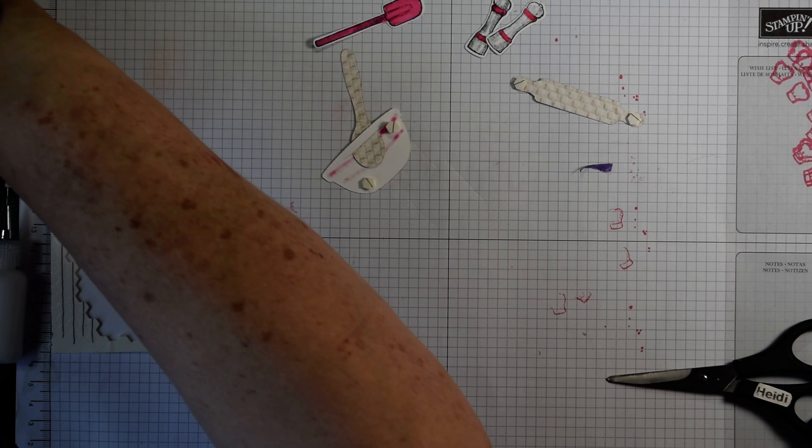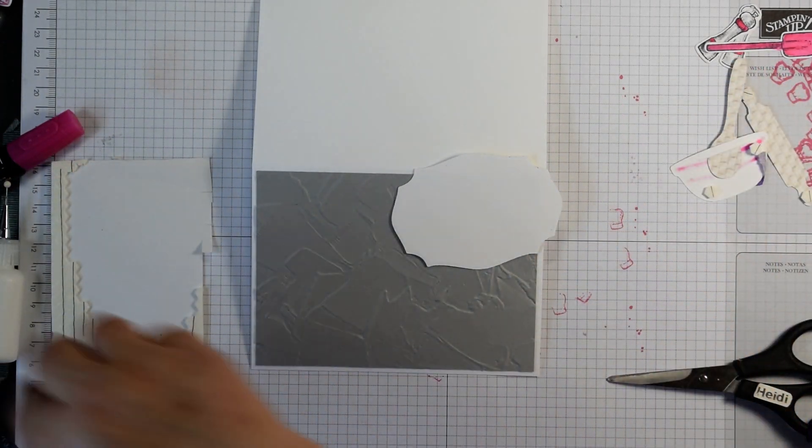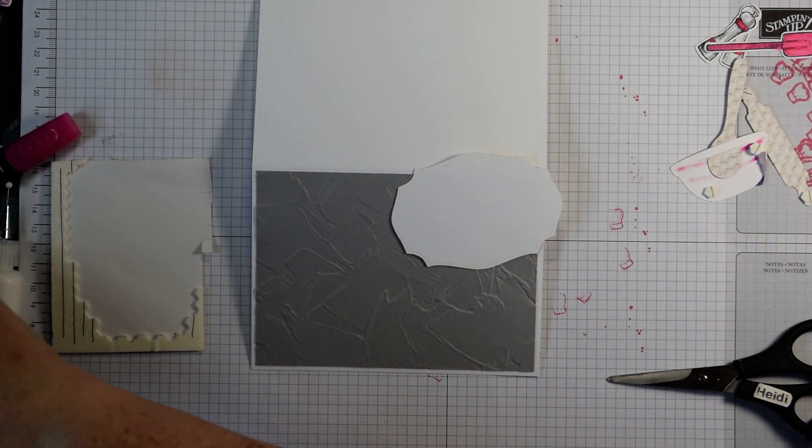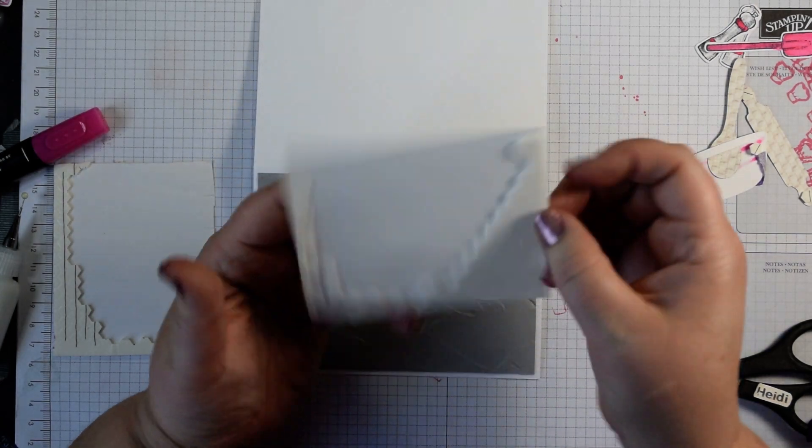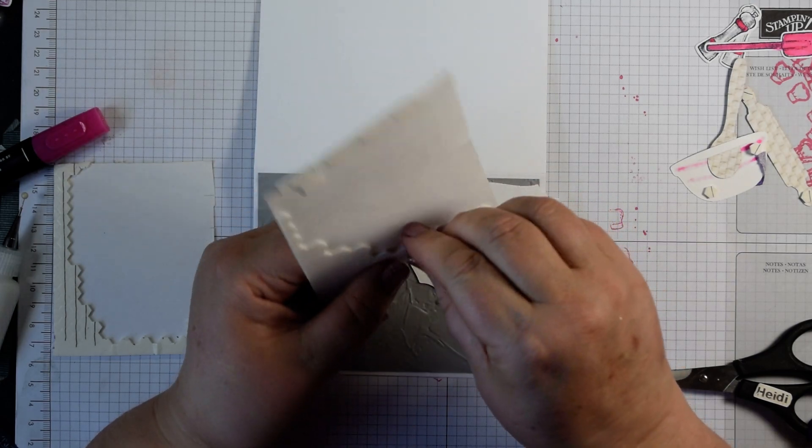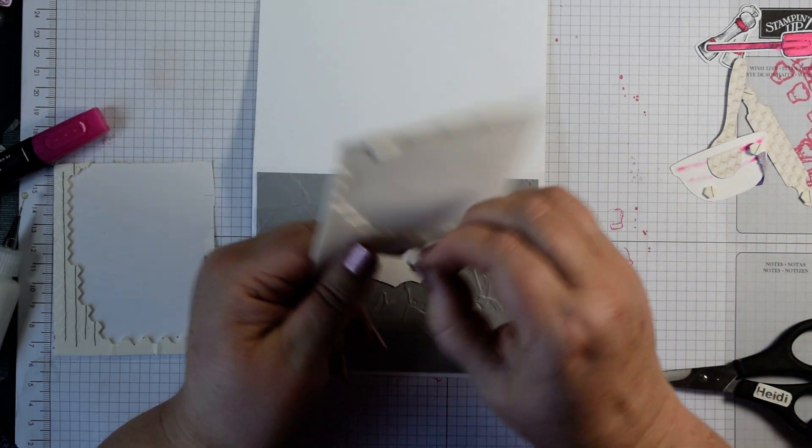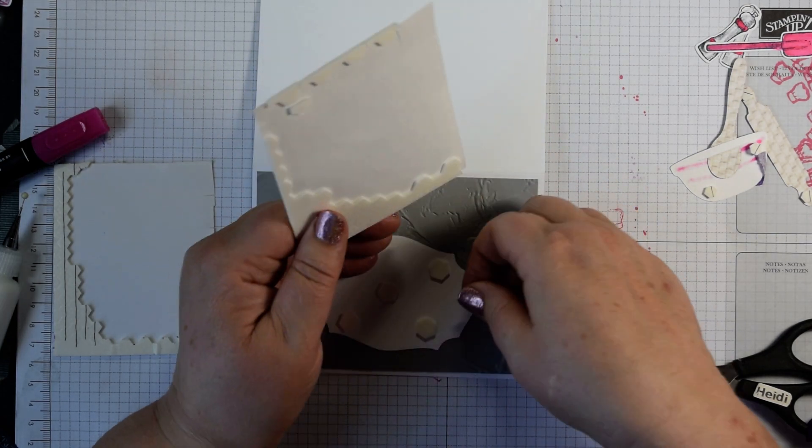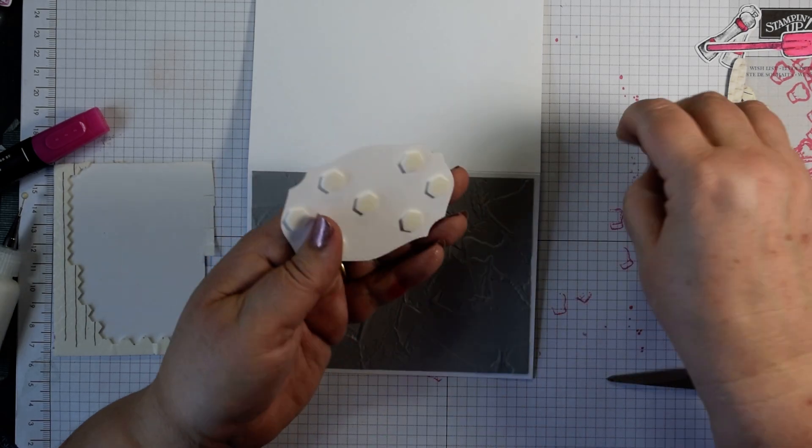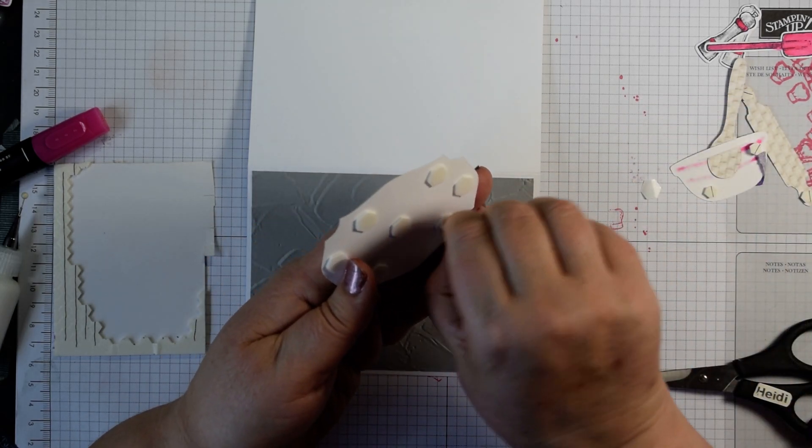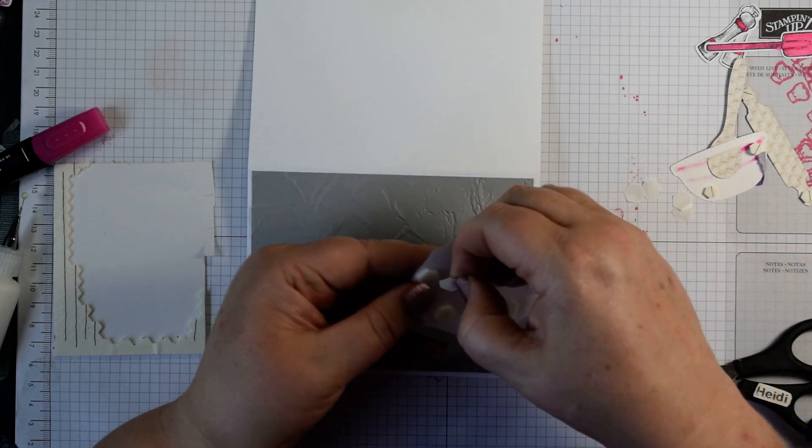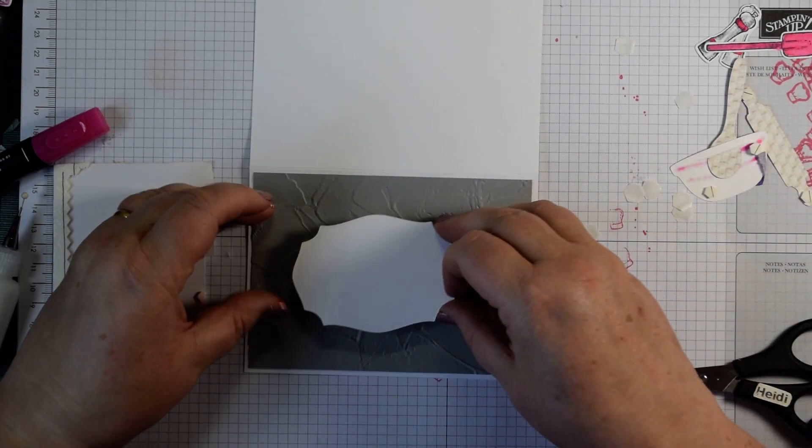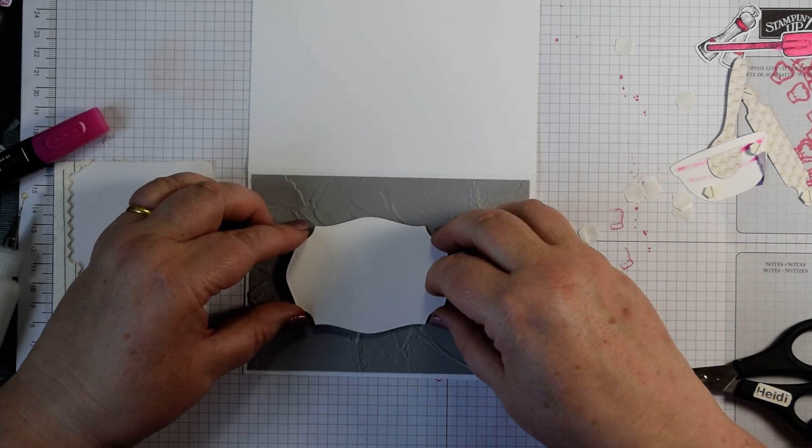I've already die cut my label. What I'm going to do now is add some dimensionals to the back and for this I'm going to use my big dimensionals. Just remove those backs. I've gone silent haven't I, not like me. Add your label and I just put it off to one side. It doesn't always have to be central, it looks quite nice sometimes if something is a little bit off center.